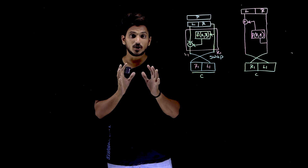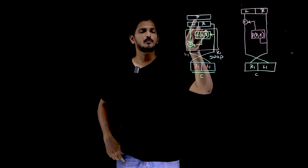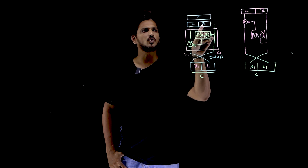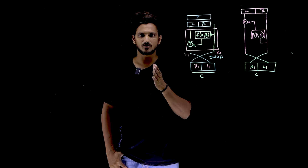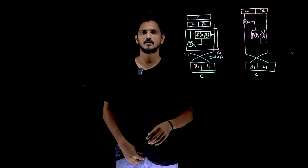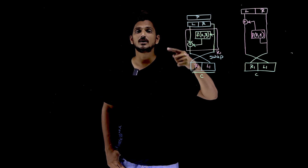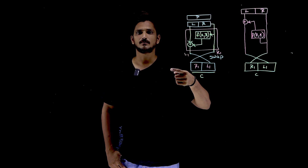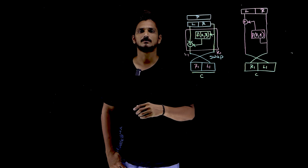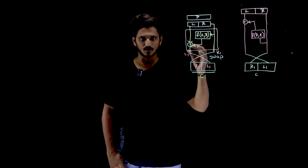Coming to today's class — in order to apply the concept we discussed in our last class, what they have done is: the plaintext is divided into two halves. Exactly to the middle, we divide the plaintext into a left part and a right part. Only the left part is going to be encrypted during the encryption phase. The right part will be moved as it is into the ciphertext.